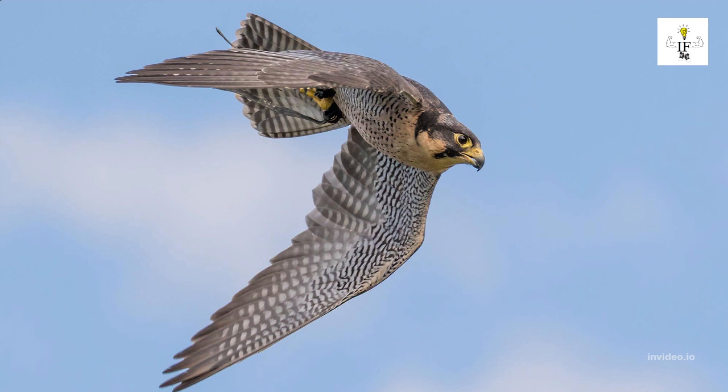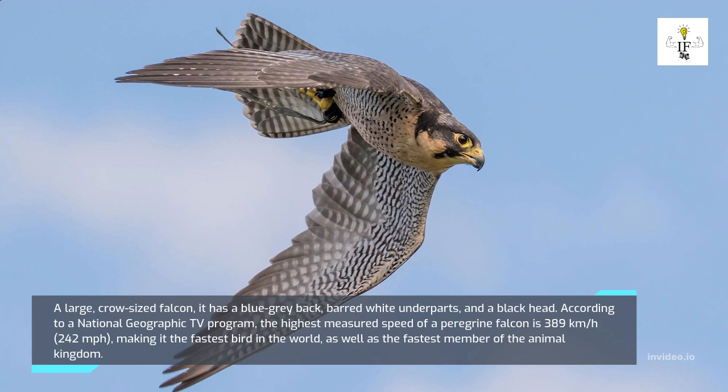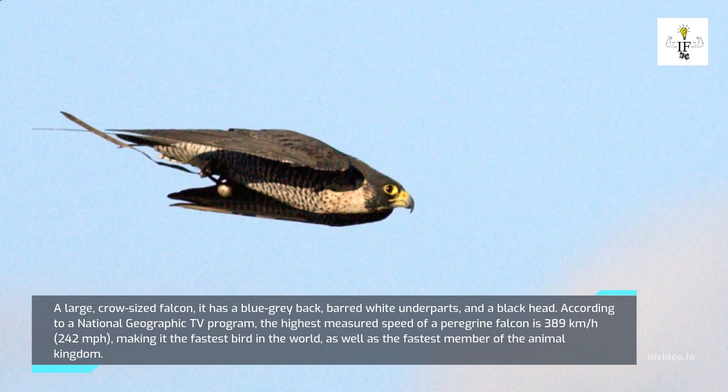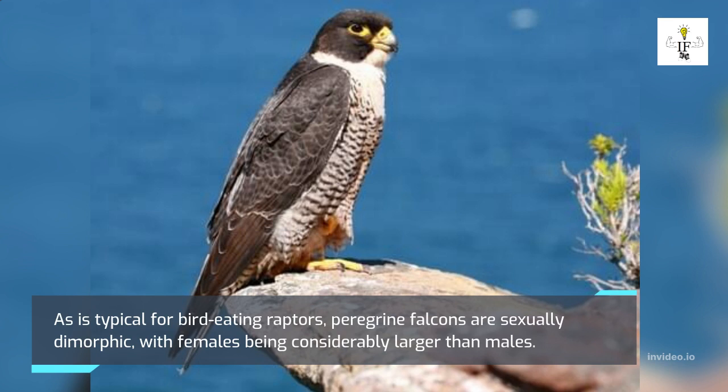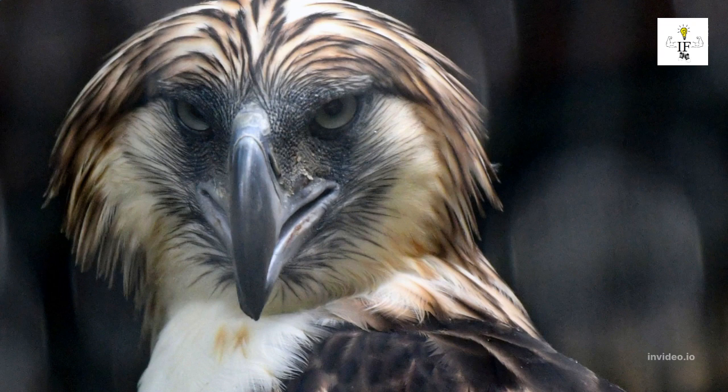A large crow-sized falcon, it has a blue-gray back, barred white underparts, and a black head. According to a National Geographic TV program, the highest measured speed of a peregrine falcon is 389 kilometers per hour (242 miles per hour), making it the fastest bird and the fastest member of the animal kingdom. As is typical for bird-eating raptors, peregrine falcons are sexually dimorphic, with females being considerably larger than males.